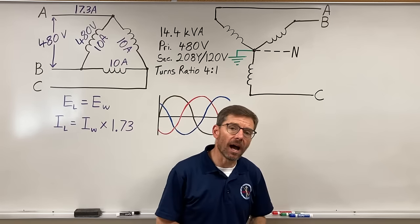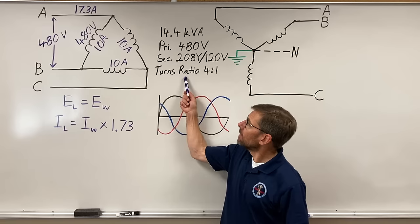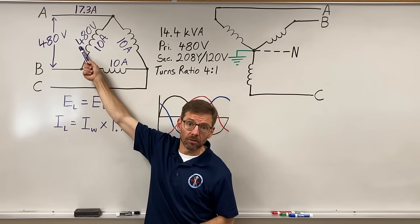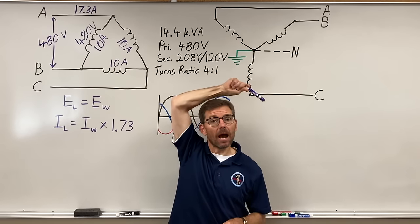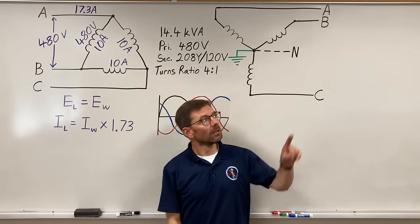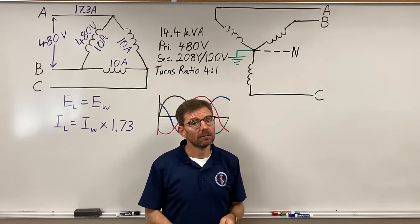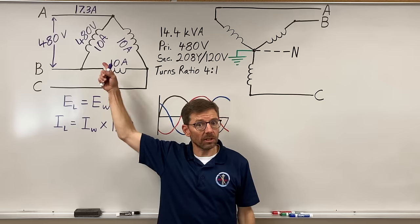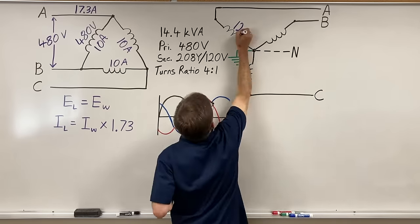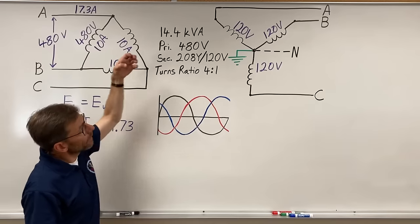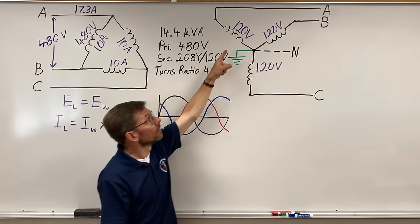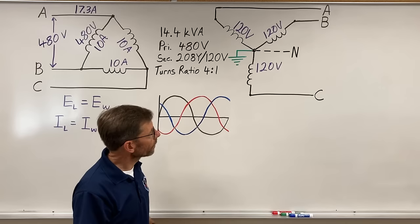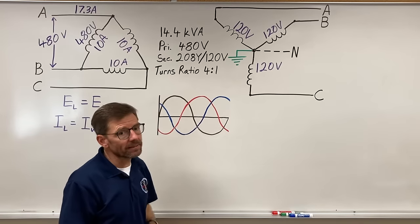Let's take a look over here at the Y. If my turns ratio is 4 to 1, that means this 480 volts has to step down. Four turns here for every turn here. The voltage here will be one quarter of the voltage here on each winding. So each winding is mutually inducing 120 volts into its respective secondary.